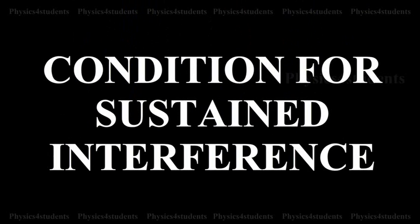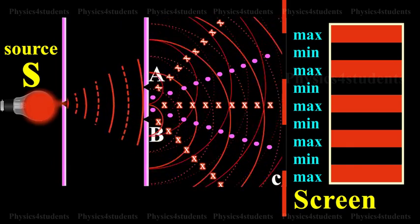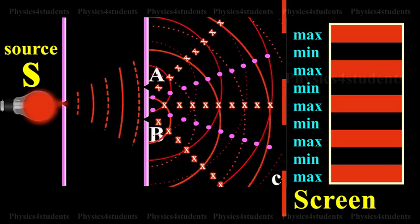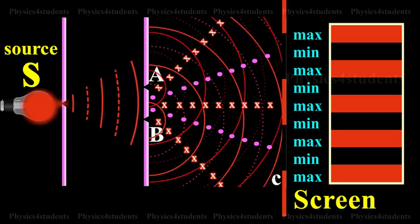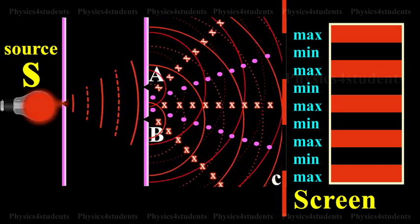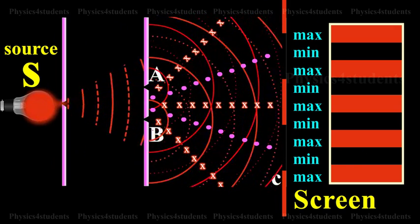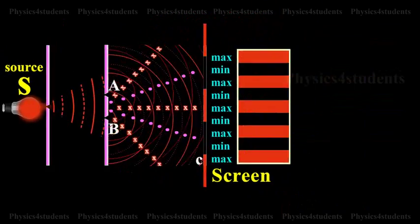Condition for sustained interference. The interference pattern in which the positions of maximum and minimum intensity of light remain fixed with time is called sustained or permanent interference pattern. The conditions for the formation of sustained interference may be stated as: The two sources should be coherent.